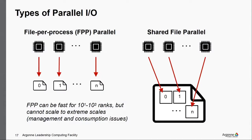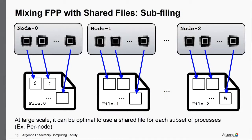Shared file parallel means you have one file and all individual ranks interact with distinct parts of it — ideally distinct, though sometimes interleaved sections. Sub-filing is also worth understanding: at really extreme scales you may run into IO bottlenecks, and sub-filing — where some subset of nodes write to their own dedicated file while all ranks share within that file — can be the best solution. It's hard to manage yourself but worth noting for extreme-scale IO.